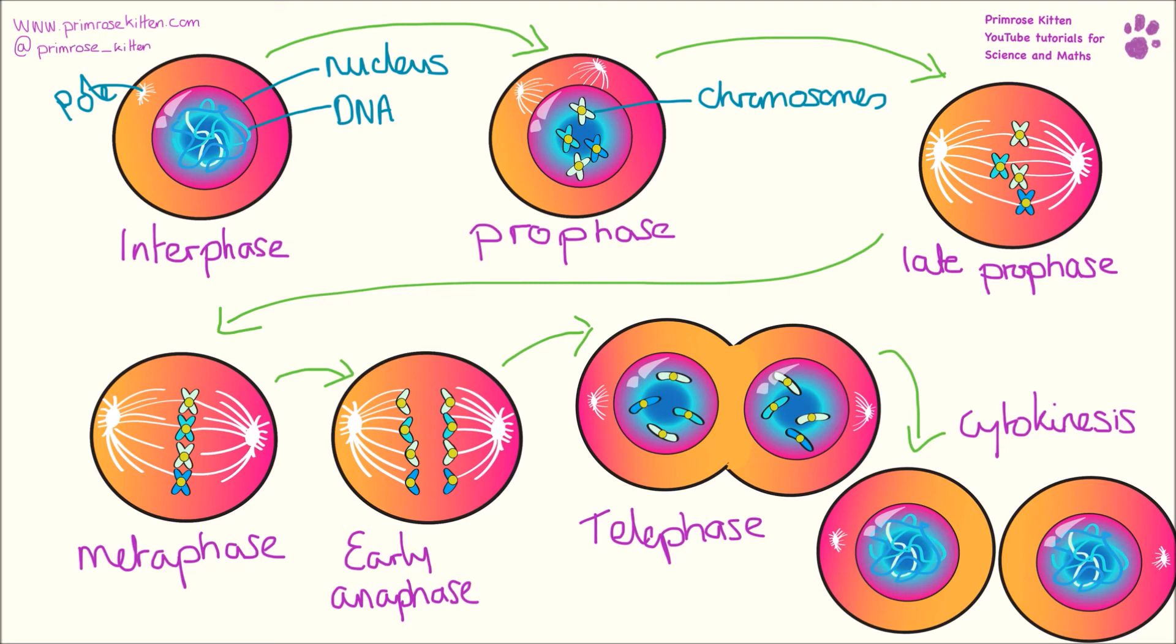Once the process of forming the new membrane around the nucleus has been completed, you will get cytokinesis, which is the separating of the cell into two new cells. You can see these are the same as the cell we had at the beginning, because we end up with two identical cells.